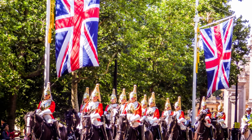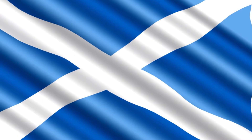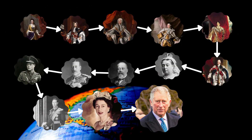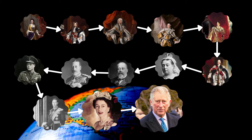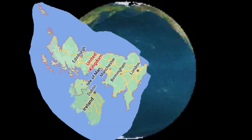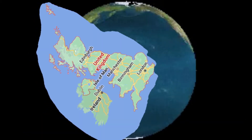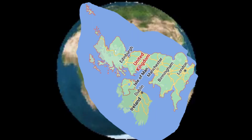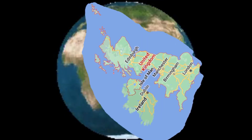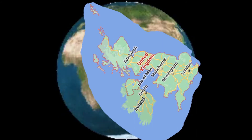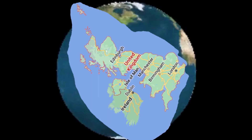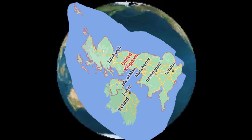We'll be looking at the monarchs of the Kingdom of Great Britain after the political union of England and Scotland on the 1st of May 1707. There have been 13 British monarchs since that union. On the 1st of January 1801, the Kingdom of Great Britain and the Kingdom of Ireland merged, creating the United Kingdom of Great Britain and Ireland, which became the United Kingdom of Great Britain and Northern Ireland following the secession of Southern Ireland in the 1920s.